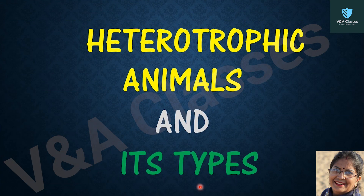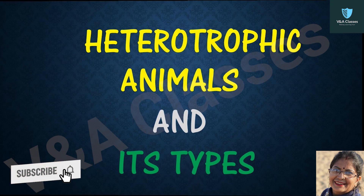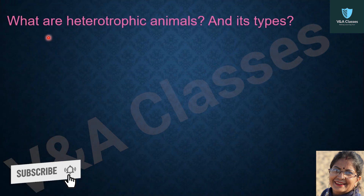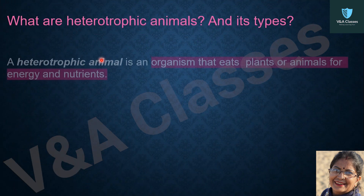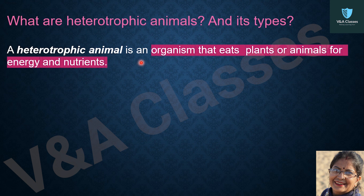Today we will discuss heterotrophic animals and their types. A heterotrophic animal is an organism that eats plants or animals for energy and nutrients.